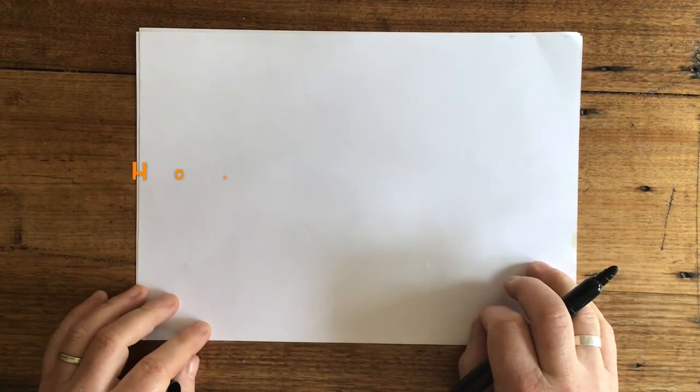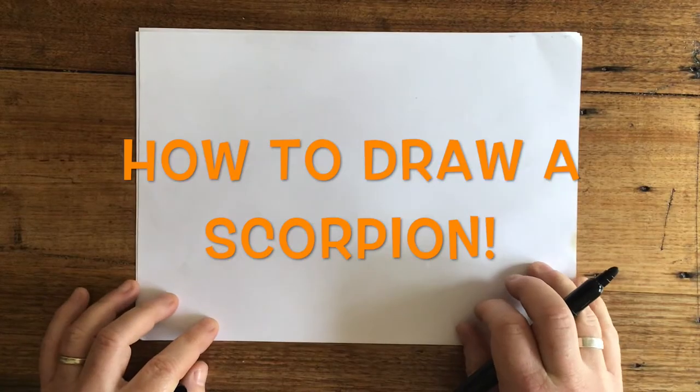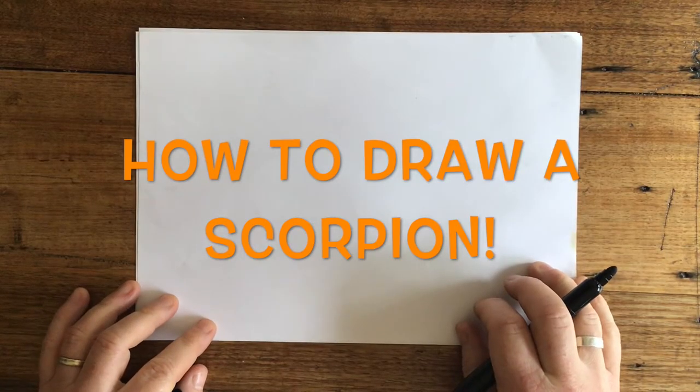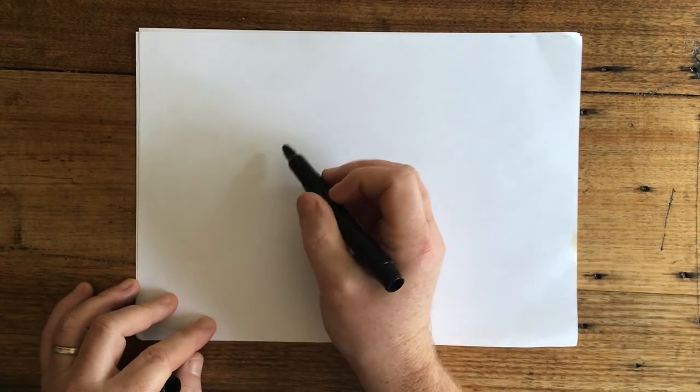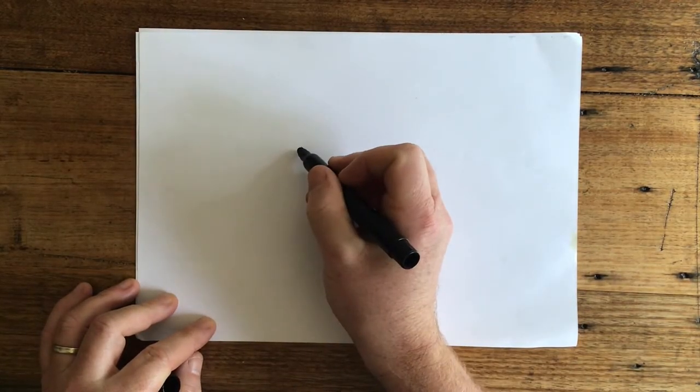Okay, so for today's lesson on drawing mini beasts and insects, we're actually going to draw a scorpion. To draw a scorpion, we're going to start with a nice big oval shape like this.